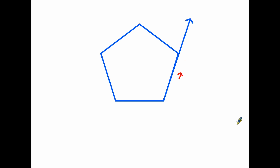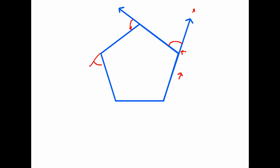A good way to picture the exterior angle is to imagine that you are walking around the outside of the pentagon. You start walking along the wall on the right, and this is your direction of travel. If you were to continue in a straight line, you would follow that direction. However, to walk around the polygon, you take a corner, and the number of degrees you turn is actually the exterior angle. The same thing happens at each corner as you continue around the shape.